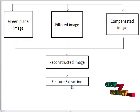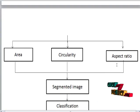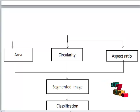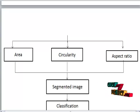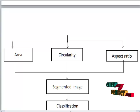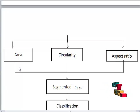In feature extraction, we are calculating area, circularity, and aspect ratio. After the reconstruction process, we get the threshold image by optimizing the threshold value. Region growing is done based on image segmentation to partition the image. After that, region growing image is obtained and in the feature extraction, area, circularity, and aspect ratio are calculated.